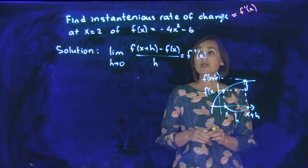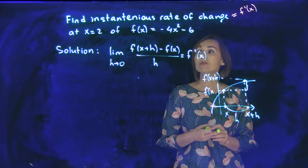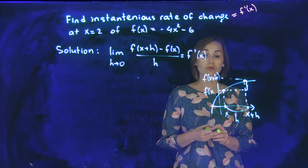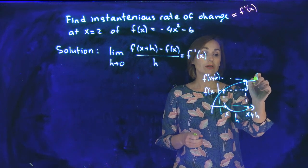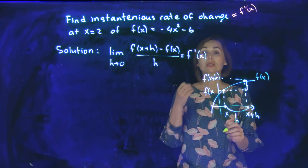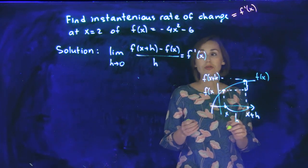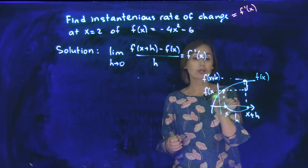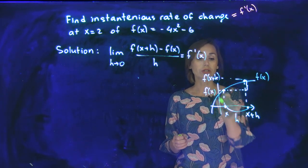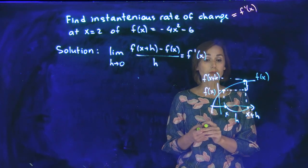And now let me explain you why derivative is instantaneous rate of change. Here is the function f at x. What the limit definition of the derivative says: in the top you have difference in the values of the function, in the bottom you have difference in the values of the argument.